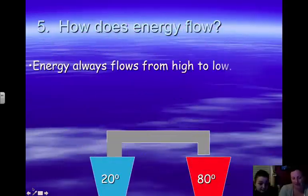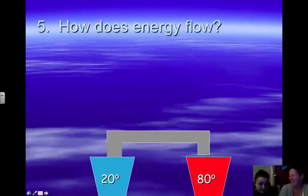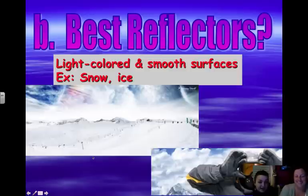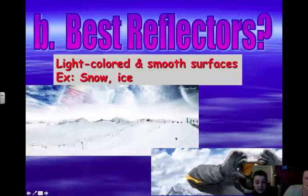Best reflectors are light colored and smooth surfaces. That's why you see the snowboarder or the skier wearing goggles to prevent the light coming in from being reflected back up into them from the snow or the ice.